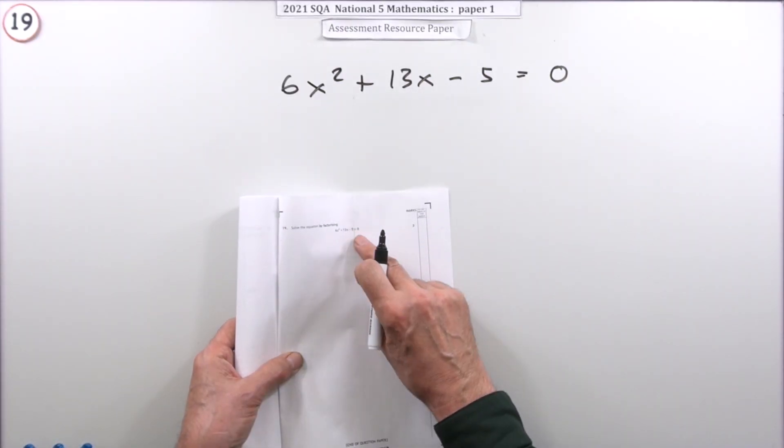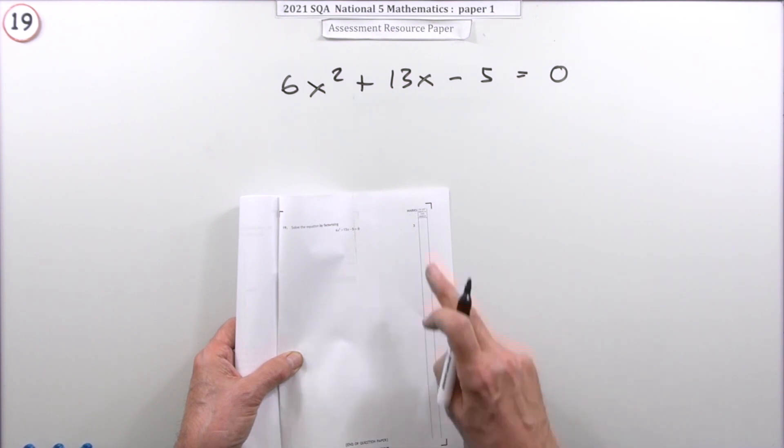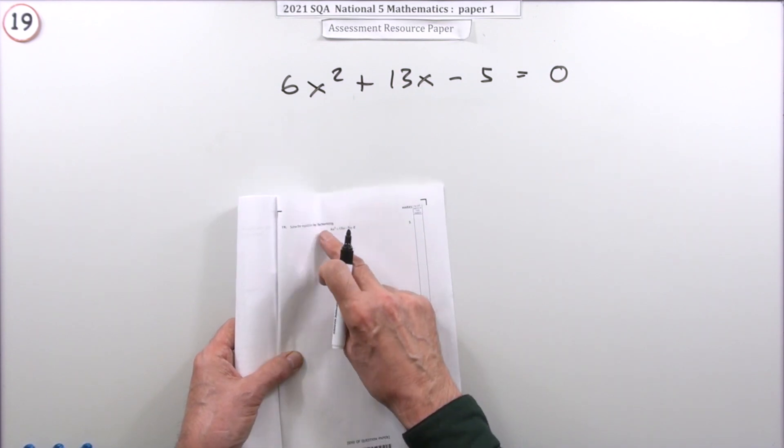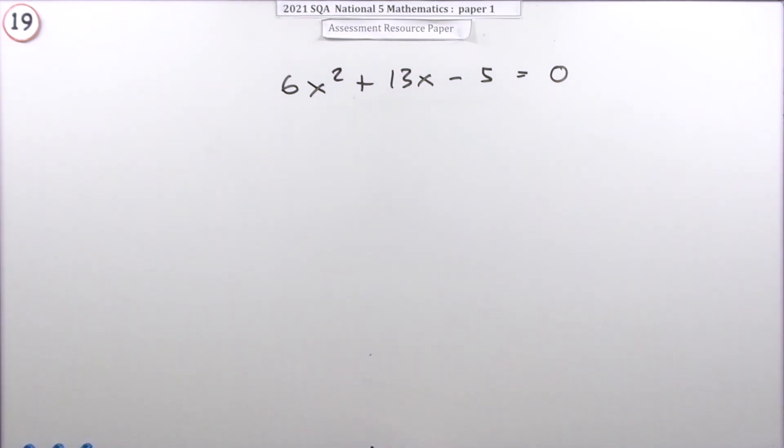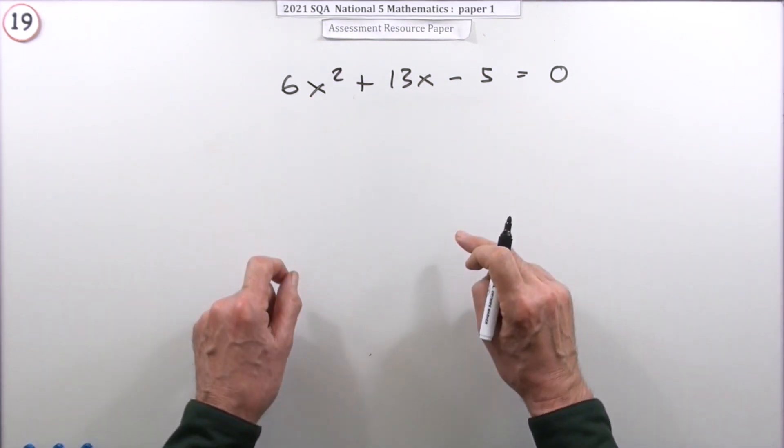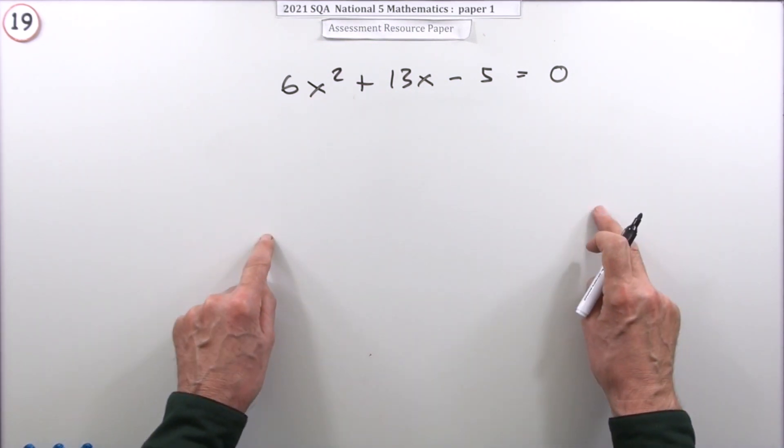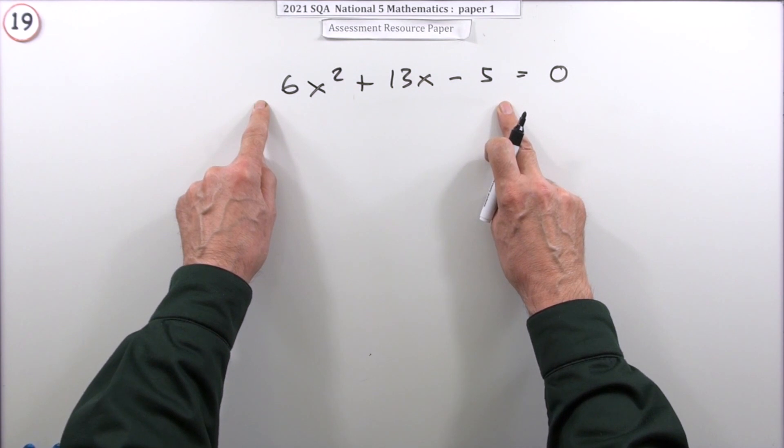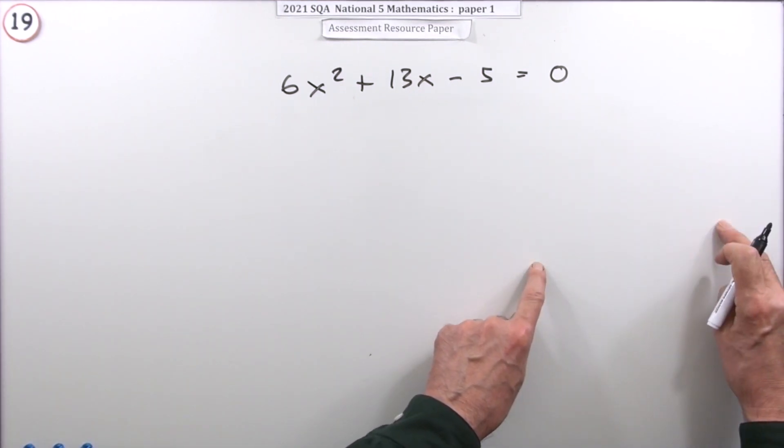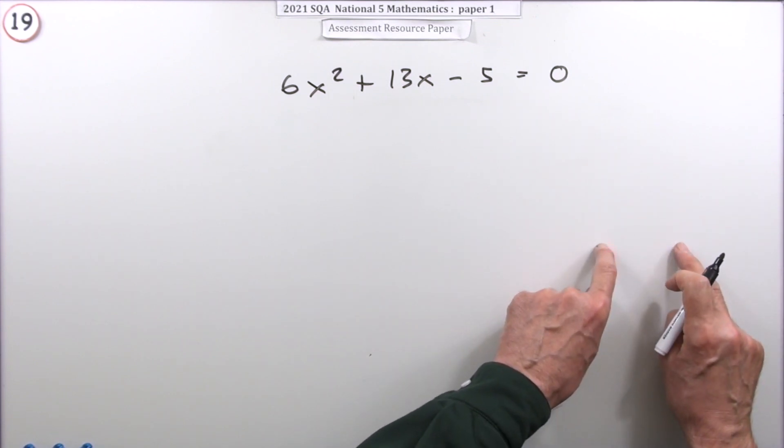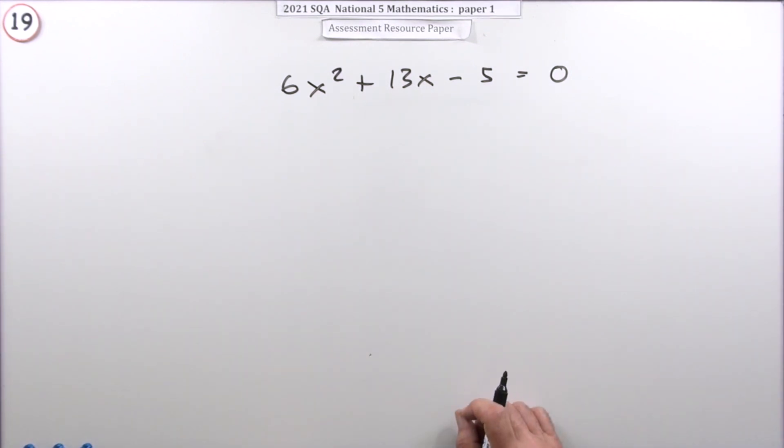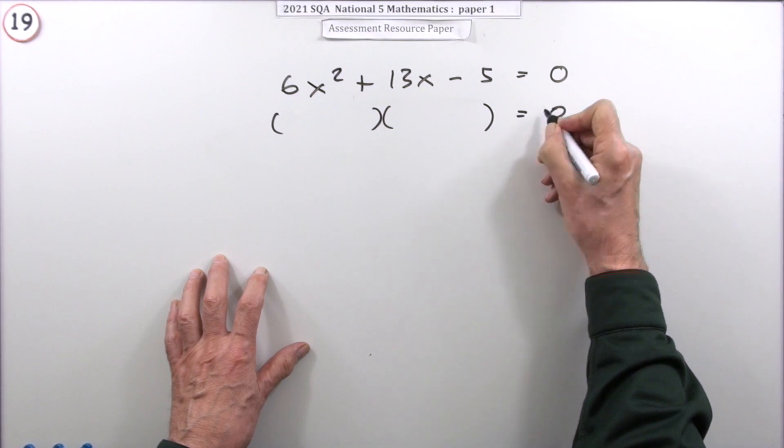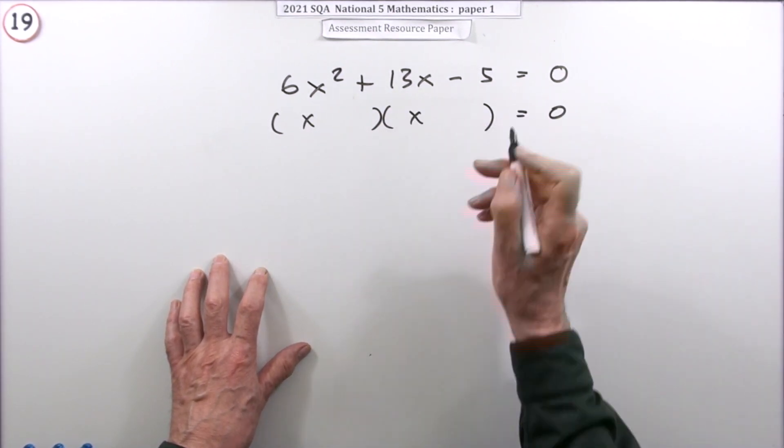Number 19, the last question in paper one of the 2021 National Five resource paper. Solve this equation by factorizing, for three marks. It is a quadratic equation, so you could have used the quadratic formula even without a calculator. Since it says it can be solved by factorizing, the discriminant would have been a perfect square. But it says factorize it, so a bracket times a bracket: so many x and a number, so many x and a number.